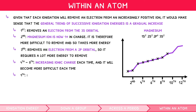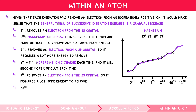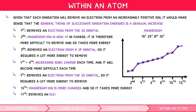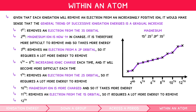The ninth ionization energy removes an electron from the 2s orbital — this is closer to the nucleus and lower in energy than the 2p orbitals, so it requires a lot more energy to remove. The tenth ionization energy also removes an electron from the 2s orbital, but the magnesium ion is more charged, so it takes more energy. The eleventh ionization energy removes an electron from the 1s orbital — closer to the nucleus and lower in energy than the 2s orbital, requiring a lot more energy. The twelfth also removes from the 1s orbital, but the ion is more charged, so it takes more energy still.